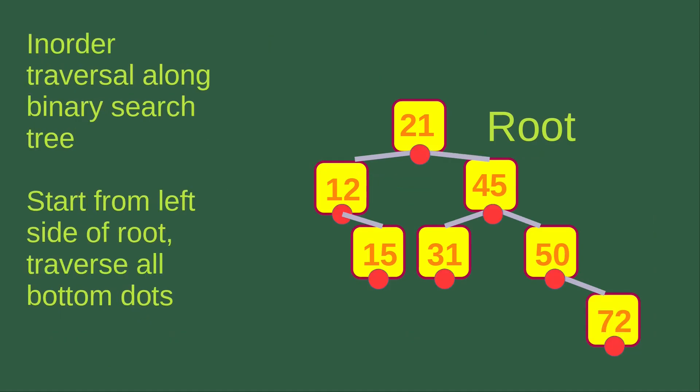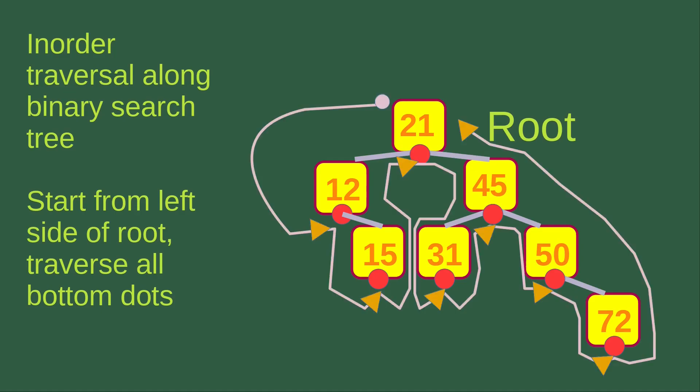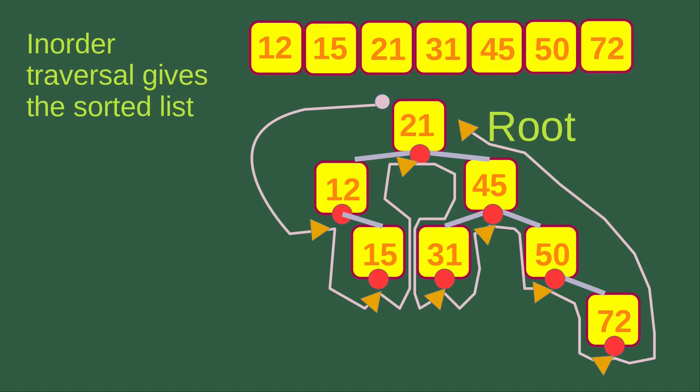To visualize the traversal process, we have a diagram. We start from the left-hand side of the root and traverse all the bottom dots on each of the elements — the dots are shown in red at the bottom of each element. Starting with the root 21 and following the arrows, we can read off the sorted numbers in order. This diagram helps us visualize the in-order traversal and see the recursion process more clearly.